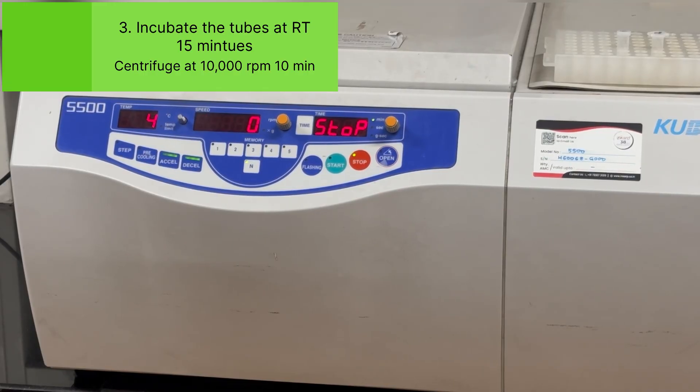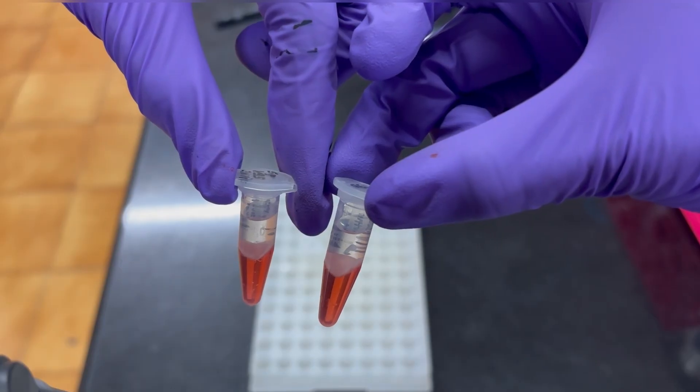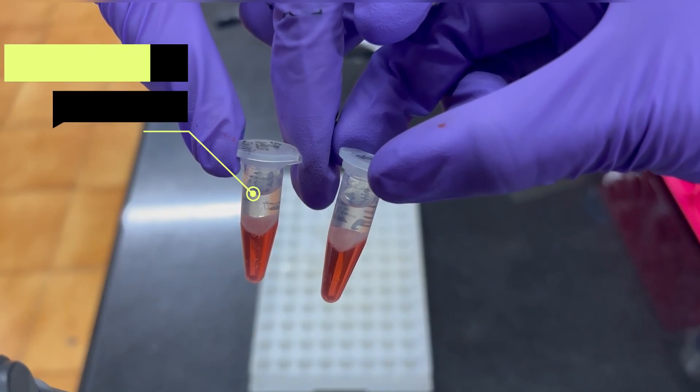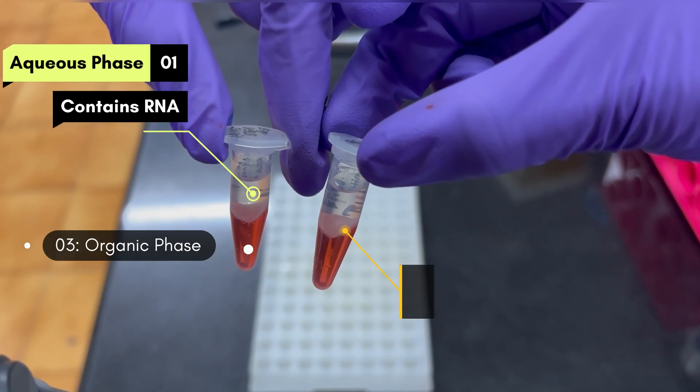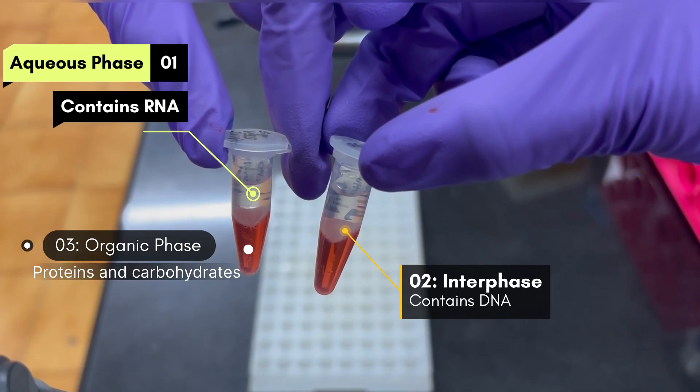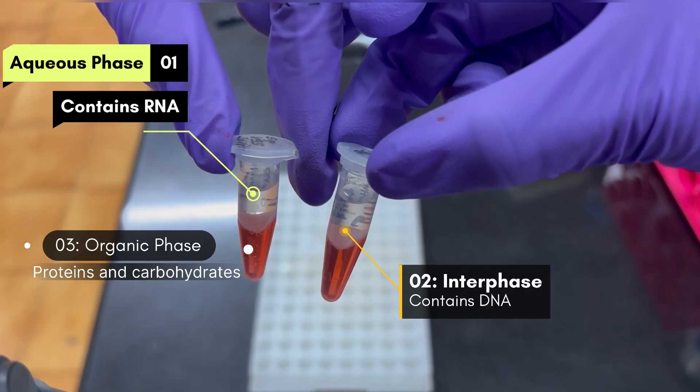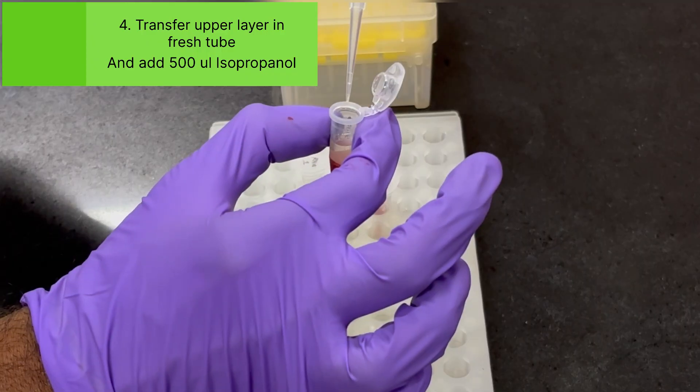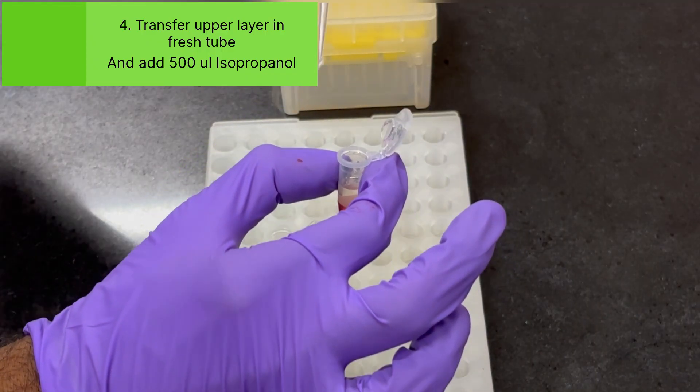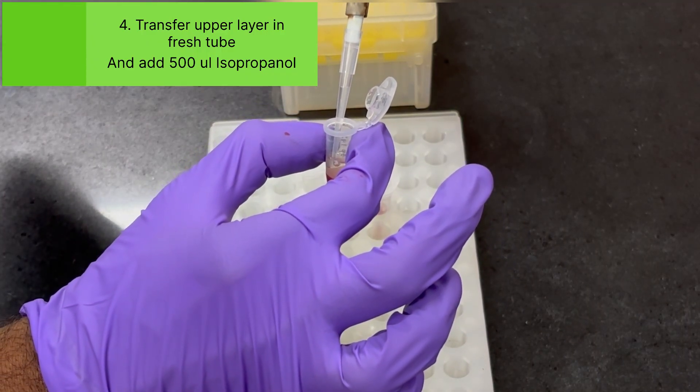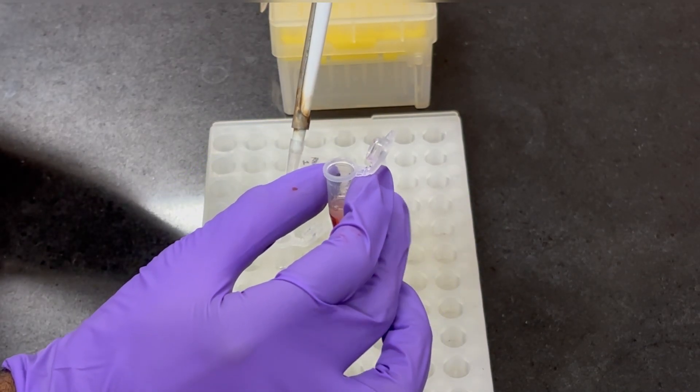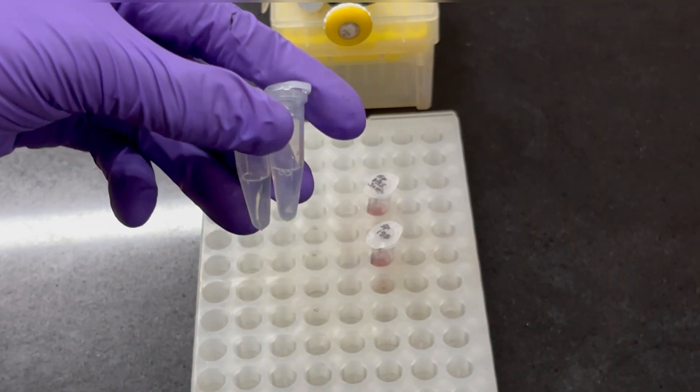So after centrifugation we will get three different layers. The upper layer is aqueous layer, the middle is interphase, and the third one is the organic phase. In our upper aqueous phase, the RNA will be there as it dissolves in water. After phase separation, transfer the upper aqueous layer into the fresh tube and make sure that you are not mixing the layers together. So this is how it looks after taking the upper aqueous phase.